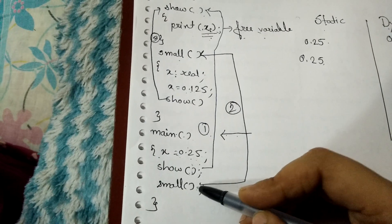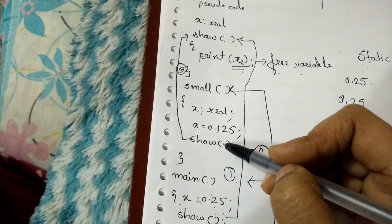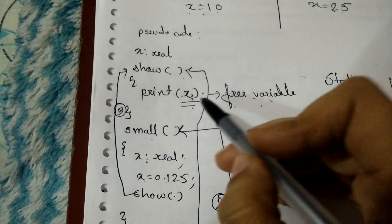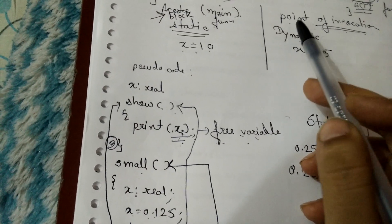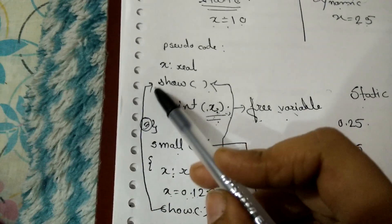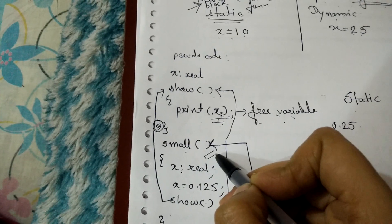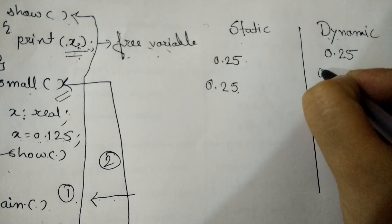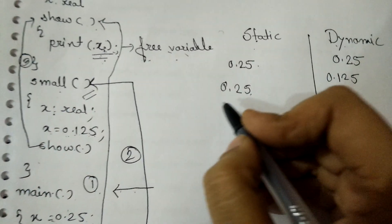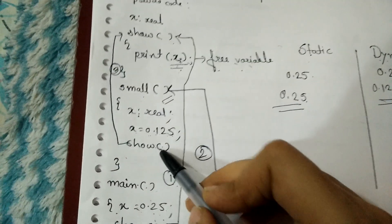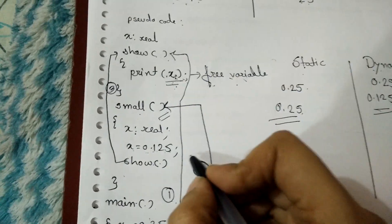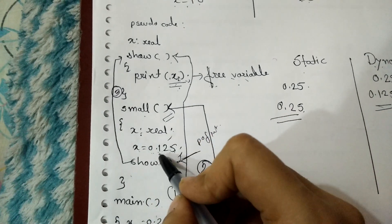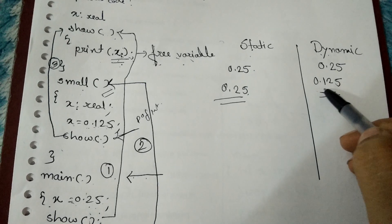Next the small function is called, and inside small we again call the show function. In show we again have the free variable X. Since we are using dynamic scoping, we look at the point of invocation. The point of invocation for the show function is the function small, and in function small the value of X is 0.125. So in this case the value printed will be 0.125 instead of 0.25, because the point of invocation is small and its value of X is 0.125.